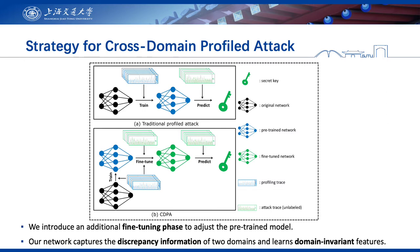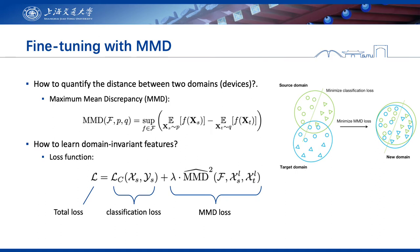Our network should capture the discrepancy information of the two domains and learn domain-invariant features. In order to capture the discrepancy information, we must decide how to quantify the distance between the profiling and attack traces. In this work, we introduce the maximum mean discrepancy (MMD), which is a standard distribution distance metric widely used in many transfer learning tasks. In order to learn domain-invariant features, we must design a new loss function. The loss function is composed of two parts: a classification loss and an MMD loss.